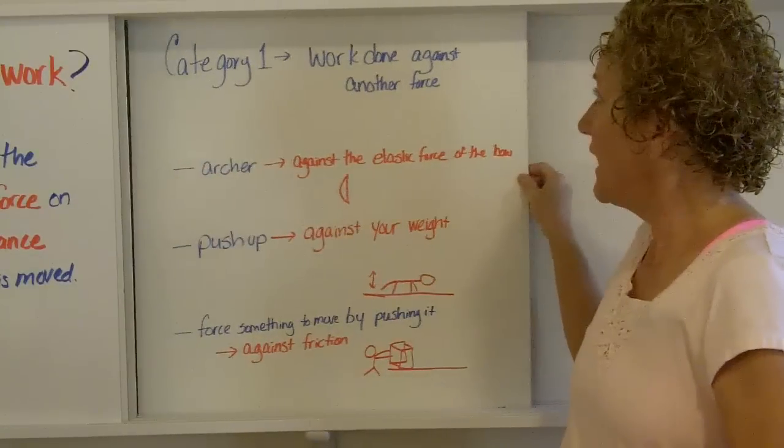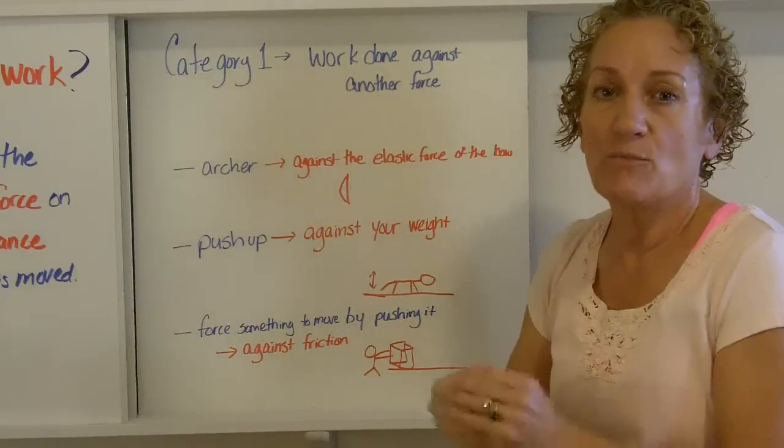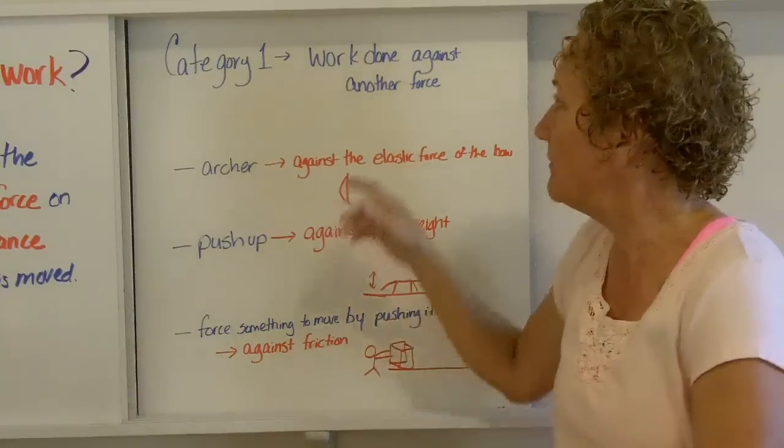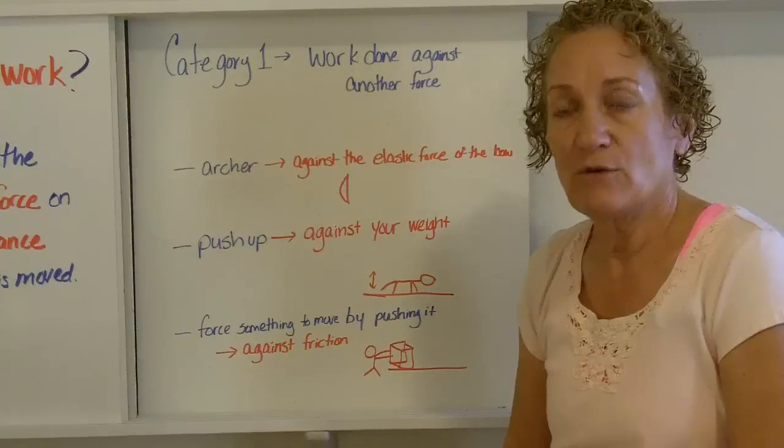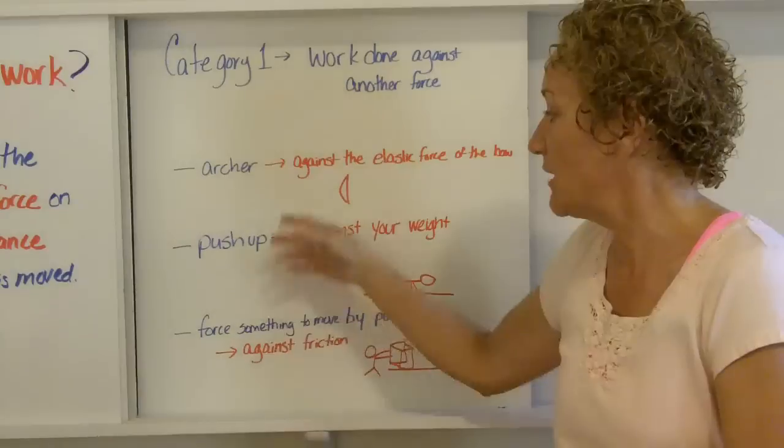So there's a couple of different categories of work we're going to talk about briefly today. First, I call it category one. There's no magic one and two, but I just put them in categories to make things a little bit easier. First kind of category is work done against another force, like lifting the barbell. You're doing work against gravity. So let's look at three examples.